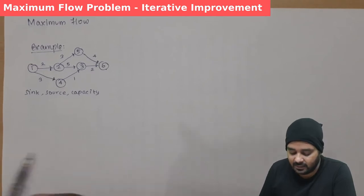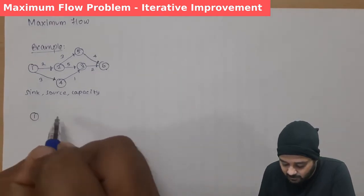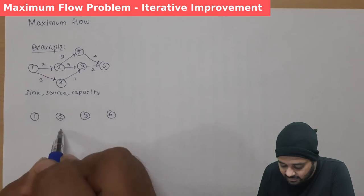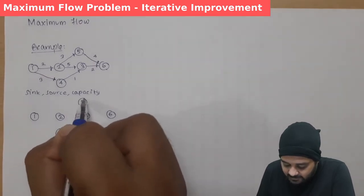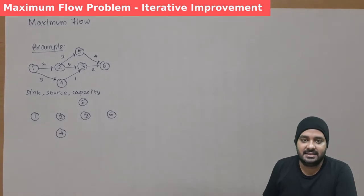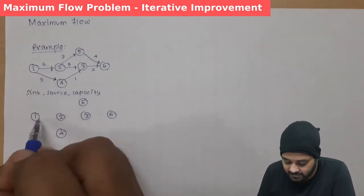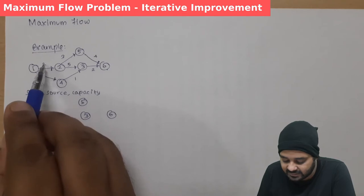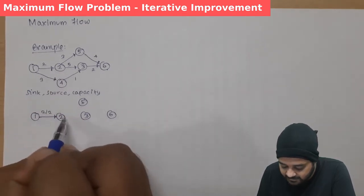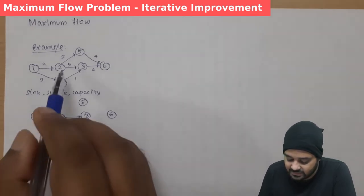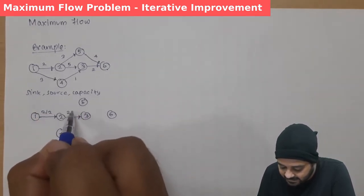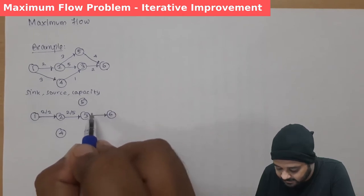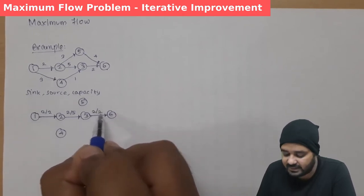Now we shall solve this example. We identify a feasible solution and then alter it to obtain the optimal solution. We consider a path starting from node 1. From 1 to 2, the capacity is 2, so we mark 2 out of 2. Then from 2 to 3, the capacity is 5, so we mark 2 out of 5. Then from 3 to 6, the capacity is 2, so we mark 2 out of 2.